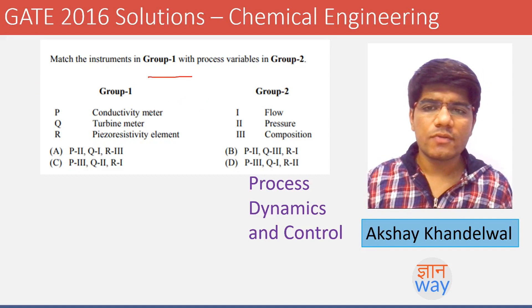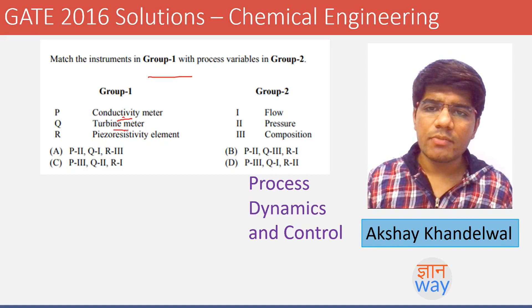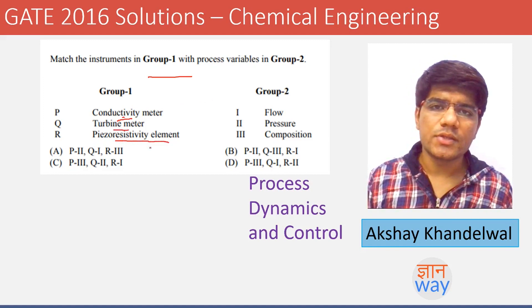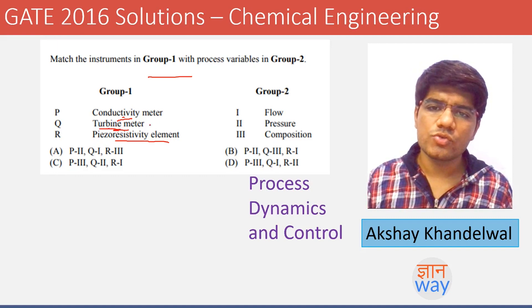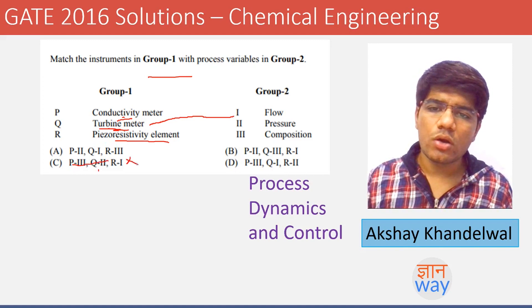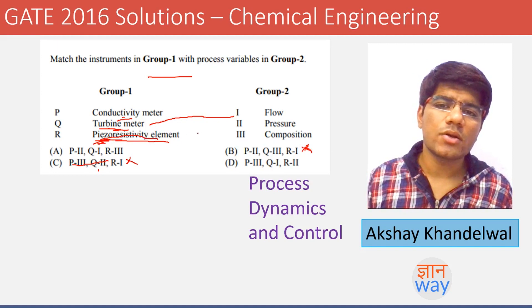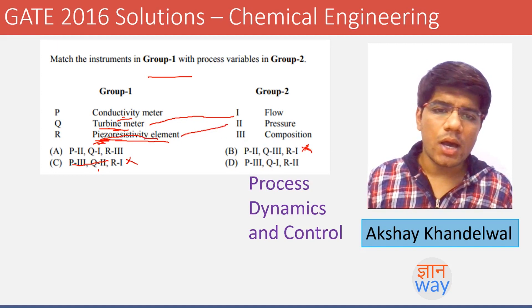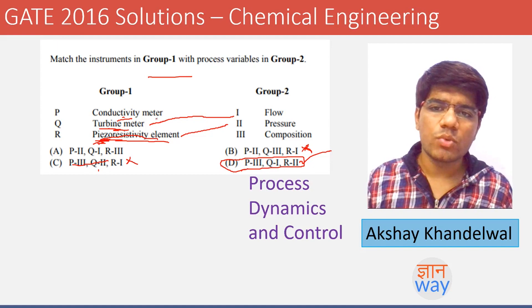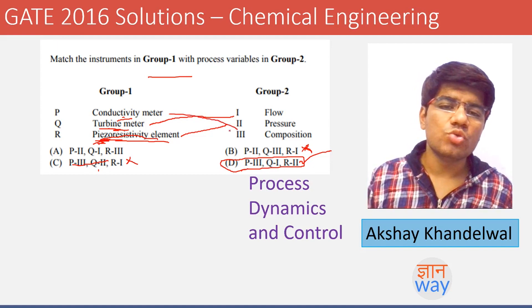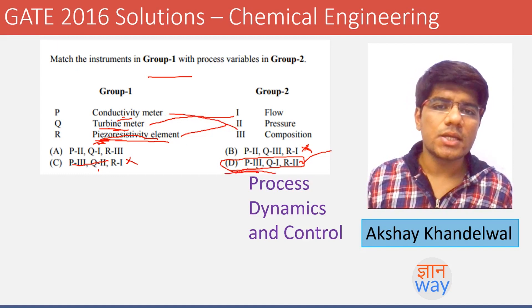In this question we are asked to do match the following. Conductivity meter, turbine meter, and piezo resistivity element are given. Turbine is used for flow, so Q equals 1. Piezo relates to pressure, so R equals 2. Conductivity meter is used for measuring composition, so P equals 3. This gives option D as the right answer.